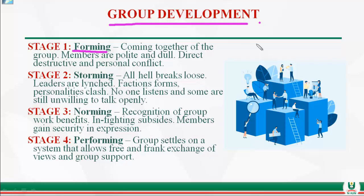Stage two is the storming stage — the most critical stage in group development. Leaders and group admins are challenged and told what to do. Factions are formed, no one listens, and some members remain unwilling to contribute. Some are just observers — sometimes called 'raiders association' — who are present but never speak.